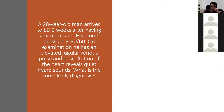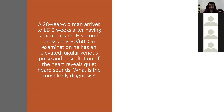Elevated jugular venous pressure — that's one thing. Blood pressure — well done. These are the two main things: a blood pressure of 80/60, which is narrow and hypotensive, and an elevated JVP. The third sign is auscultation revealing quiet or muffled heart sounds. What is that most likely indicative of?